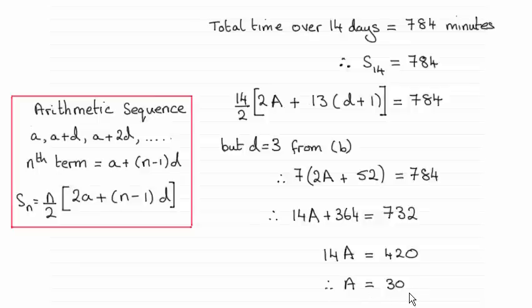And to do this, all I did was take the total time over 14 days, as we're given as being 784 minutes. And this was the sum of the first 14 terms of an arithmetic progression.